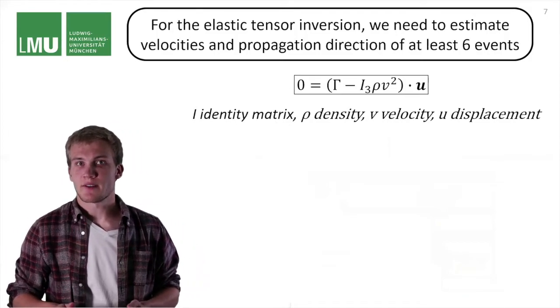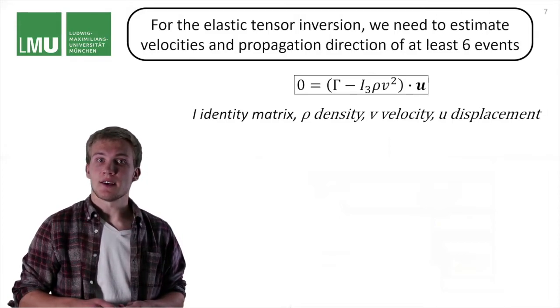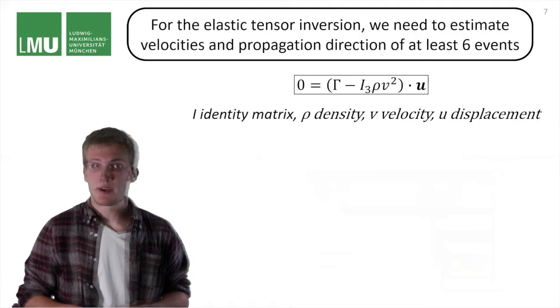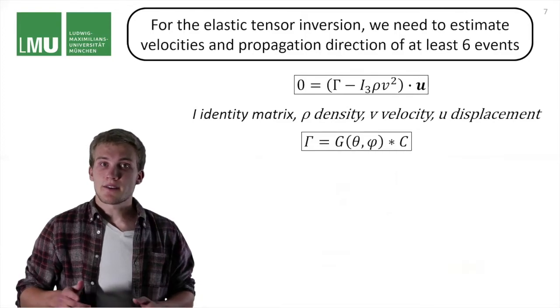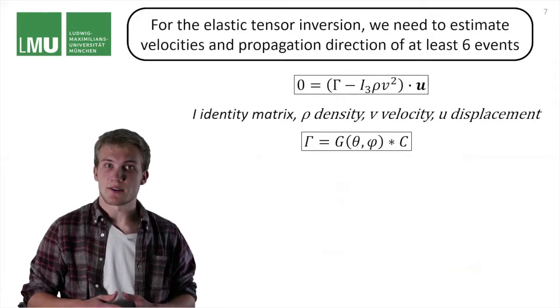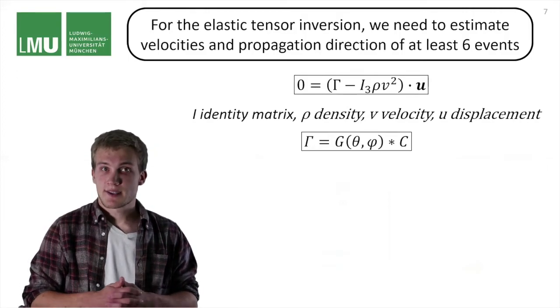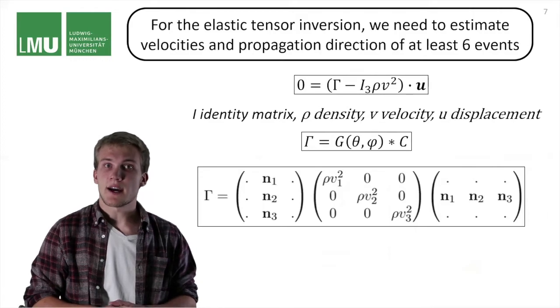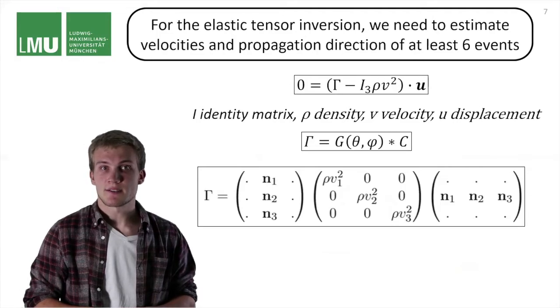Basically all the effects we have discussed so far originate from the Kelvin-Christoffel equation. This equation connects the wave parameters that can be expected with certain material properties and the propagation direction. This is an eigen problem posed for the Kelvin-Christoffel matrix gamma. Here is the formulation for gamma. We can see that it is connected via the propagation direction with some forward operator G to the elastic tensor. Because gamma is always symmetric, we can go ahead and diagonalize it with its eigenvalues and eigenvectors. The eigenvalues are density times velocity squared, and the polarizations are the eigenvectors.